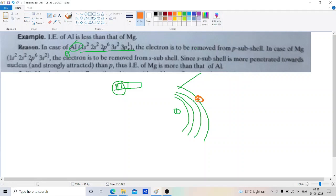But in case of magnesium, the atomic number is 12.